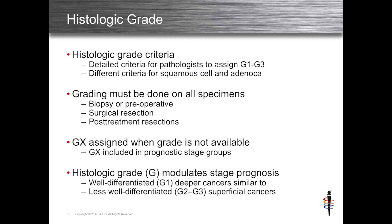Histologic grade was simplified with detailed criteria for both squamous and adenocarcinoma based on the College of American Pathologists. G4 undifferentiated tumors were eliminated because too many people were defaulting to G4 when they couldn't make a decision, and an undifferentiated tumor could be either squamous or adenocarcinoma. We also tried to discourage GX and would like to eliminate it altogether, because grade has been determined to be a significant prognostic driver of overall survival.